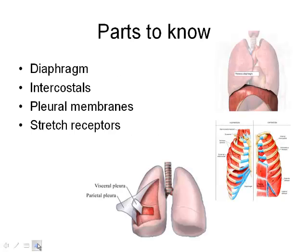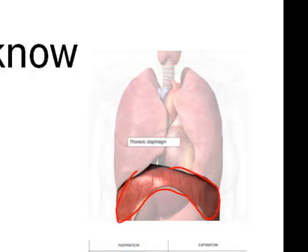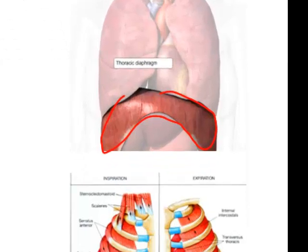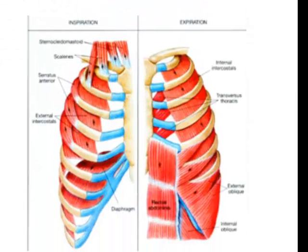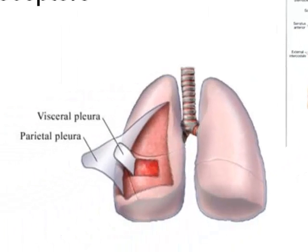Here are the parts to know, so you can write these down. The vocabulary: we need to know what the diaphragm is — it's the muscle that is below the lungs, just at the bottom of the chest cavity. And the intercostals, which are basically the muscles in between the ribs. So anytime you're gnawing on pork ribs, you're pretty much eating their intercostal muscles. And the pleural membrane, which is pretty much just the membrane that surrounds the lungs, and also stretch receptors.